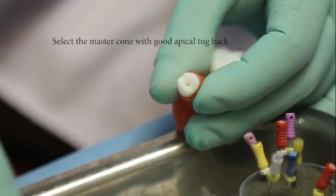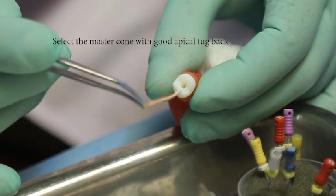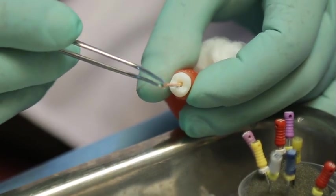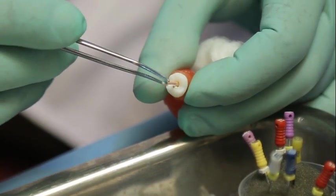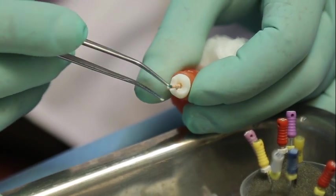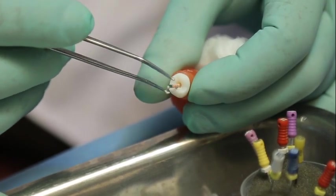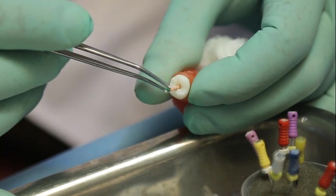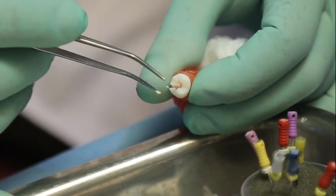Next is coating canal with the master cone. Master cone itself is used for coating the canals. Here I am using Seal Apex as the sealer.